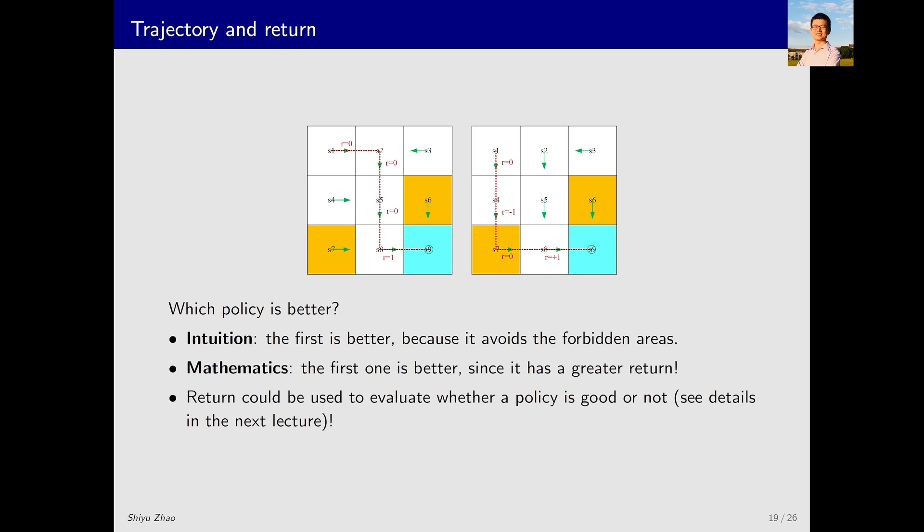Next, let's pay attention to the role of return in reinforcement learning. Analyzing these two trajectories, which one is better or which policy is better? Intuitively, we know that the first policy is better because it avoids entering the forbidden area, unlike the second policy. In addition to intuition, we can examine the two policies from a mathematical perspective. Recall the return from the first trajectory is positive 1, whereas the return from the second is 0. Comparing returns, we find that the first policy yields more rewards, making it a better policy. Hence, the mathematics is consistent with the intuition. Mathematically, we describe this through the concept of return. In the next lecture, we will see how return can be used to evaluate whether a policy is good or bad.